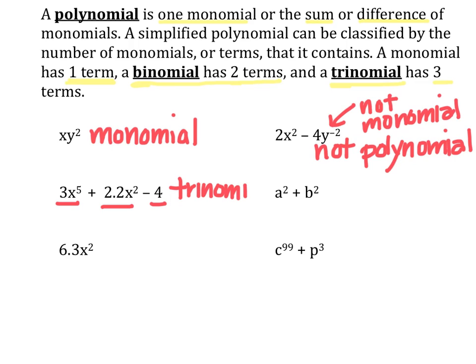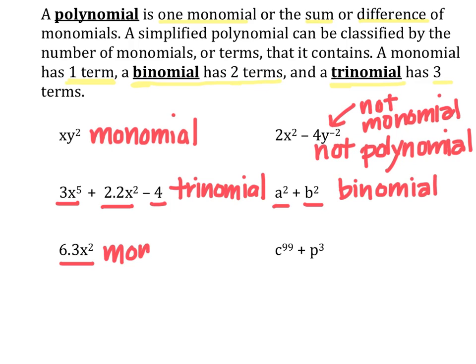We could also call it a polynomial, but a trinomial specifically says it's the sum or difference of three monomials. a squared plus b squared — we have one monomial plus another monomial, which means it's a binomial. We can also call it a polynomial, but specifically it's a binomial because we're adding two terms. 6.3x squared is one term and it is a monomial. c to the 99th plus p cubed is also the sum of two monomials, so that would be a binomial.